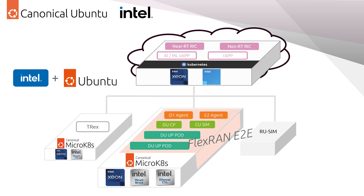The demo is deployed on a micro-Kubernetes platform executing on the Intel Xeon third-generation processor, with Ethernet controller E810 and accelerator card ACC100. SMO and near-real-time RIC run on a native Kubernetes cluster, while the RAN network functions run on another micro-Kubernetes cluster. The demo is based on microservice architecture on the FlexRUN end-to-end system, with traffic generator T-Rex and ORAN-compliant commercial radio and UE simulator. The DU function block is decomposed into DU-UP and DU-CP microservices, enabling flexible and dynamic orchestration on VDU compared to traditional monolithic architecture.